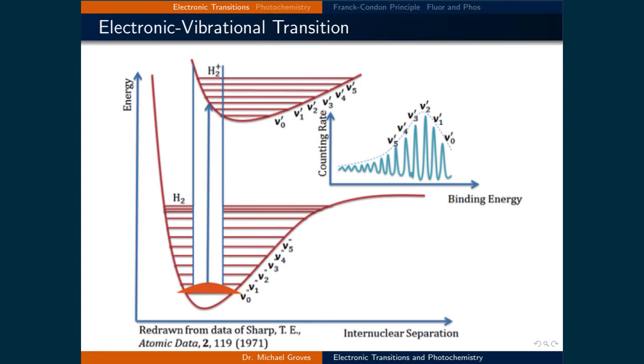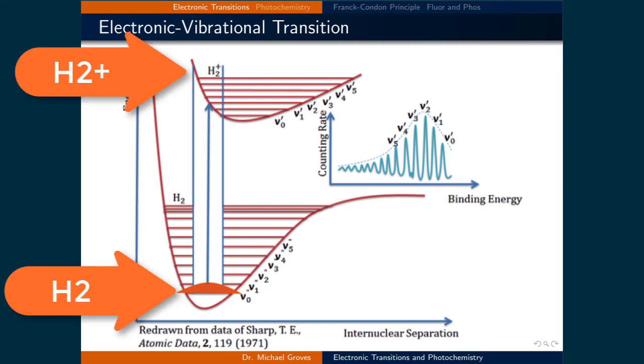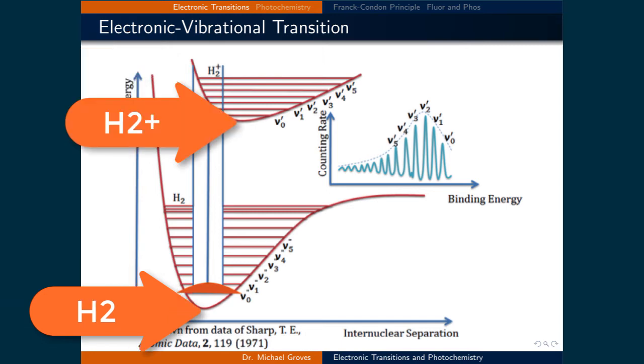Electronic transitions seldom happen alone. There is a lot of energy involved in an electronic transition, and some of that energy can be used for lower energy transitions, such as vibrational transitions. The image in this slide is a representation of the ground state of a hydrogen molecule and the ionized hydrogen molecule after the absorption of a photon. There are two curves, and they both represent the electronic potential that the molecules exist in. They both have minima, since there is an ideal intermolecular spacing between the two nuclei.